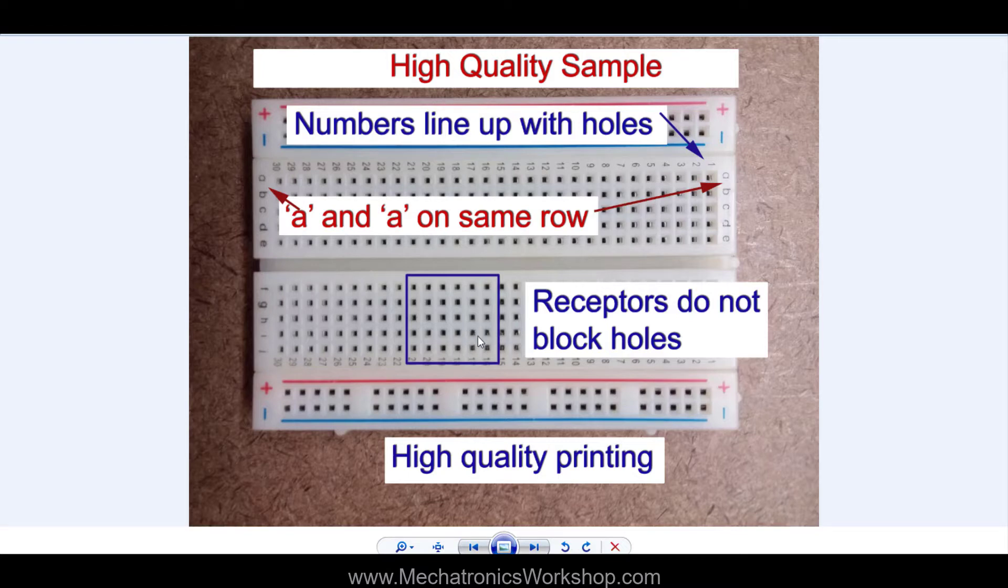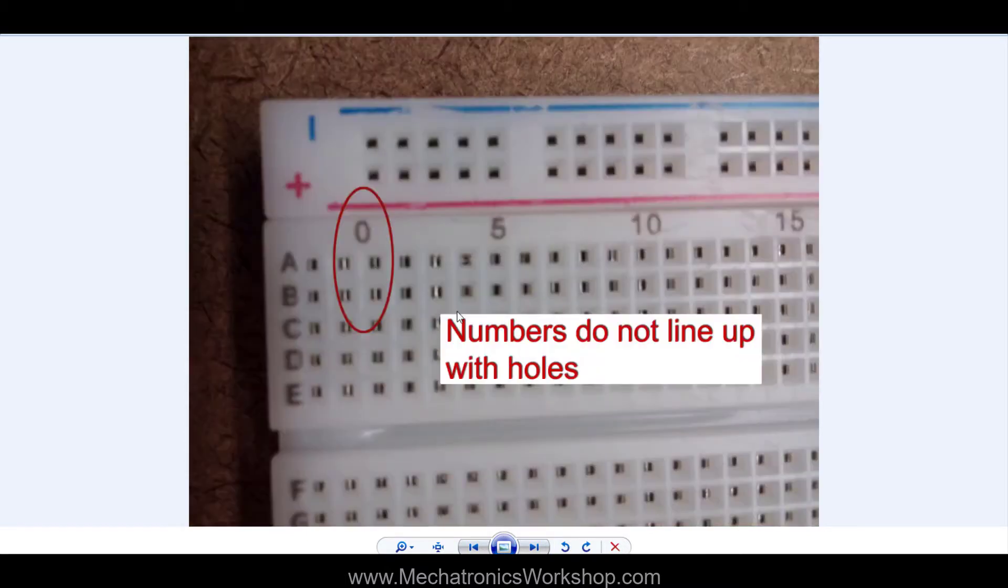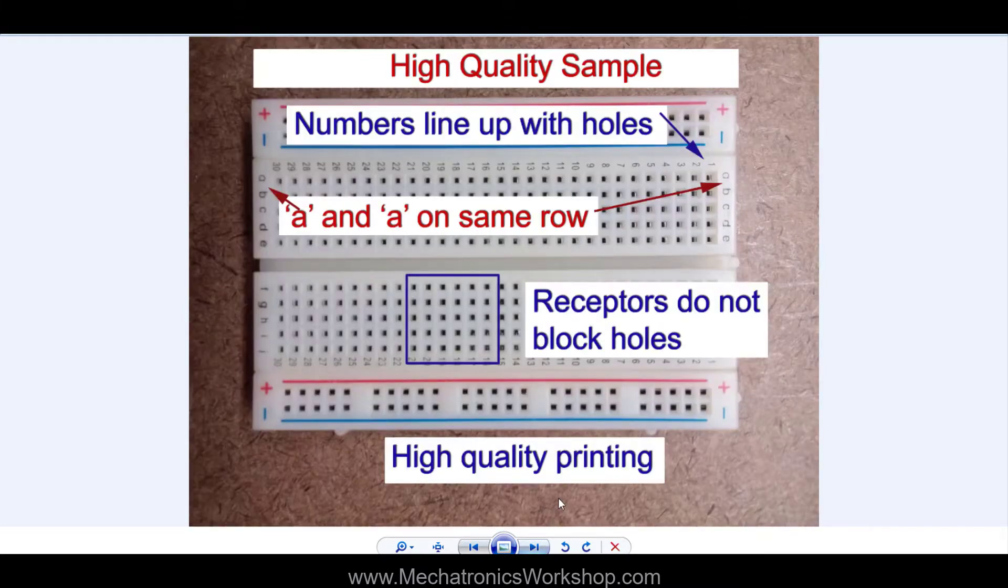So let's go compare now. I mentioned first that the numbers line up on a good board. Let's go look at a bad board. Here the numbers don't line up. See how far off it should be? It's just above this column and it's right in between those columns.